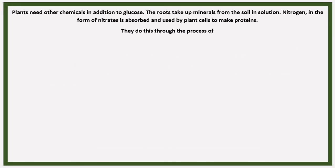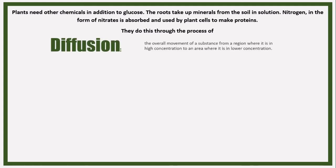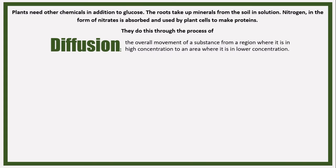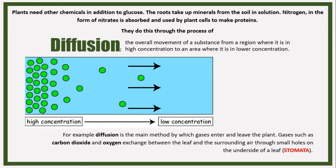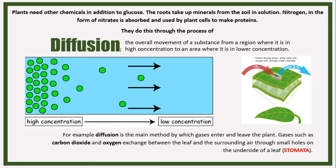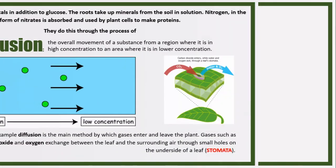Plants need other chemicals in addition to glucose. Roots take up minerals from the soil in solution - nitrogen in the form of nitrates is absorbed and used by plant cells to make proteins. They do this through the process of diffusion. Diffusion is defined as the overall movement of a substance from a region where it is high in concentration to an area where it is lower in concentration. For example, diffusion is the main method by which gases enter and leave the plant through the stomata, where carbon dioxide and oxygen are exchanged.